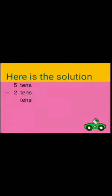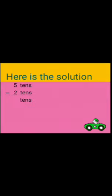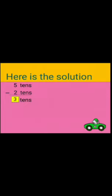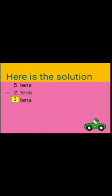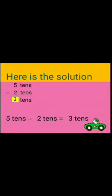Now, we will do normal subtraction of 5 and 2. When we subtract 2 from 5, we get answer 3. Next step is, we will write this answer in expression: 5 tens minus 2 tens is equal to 3 tens.